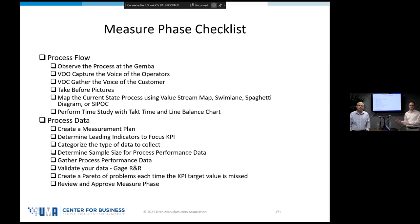We're going to show you both the paper version and the electronic version today. The process flow and process data checklists are there so you can always come back to them when you're wondering where you are in the process and what to do next. If you follow the checklist, you can't go wrong. And if you see something on the checklist that doesn't really apply to this project, just put non-applicable on it.